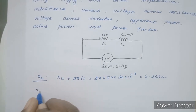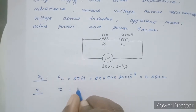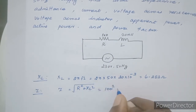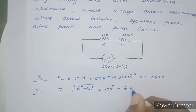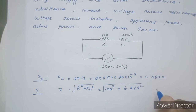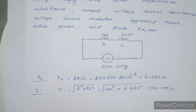Now calculate impedance. Z is equal to the square root of R² plus XL². The answer is Z = √(100² + 6.283²) = 100.197 ohms.